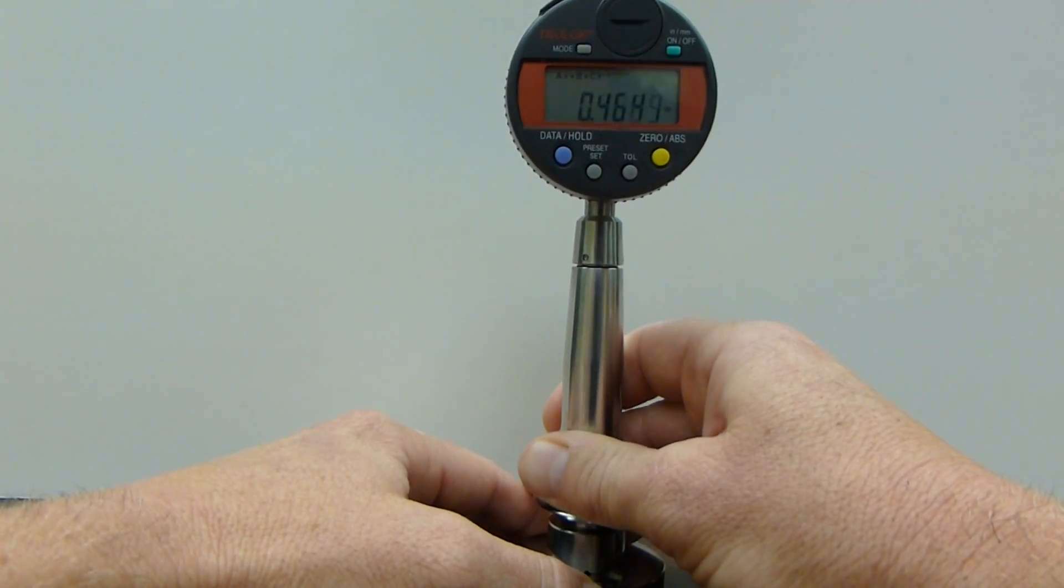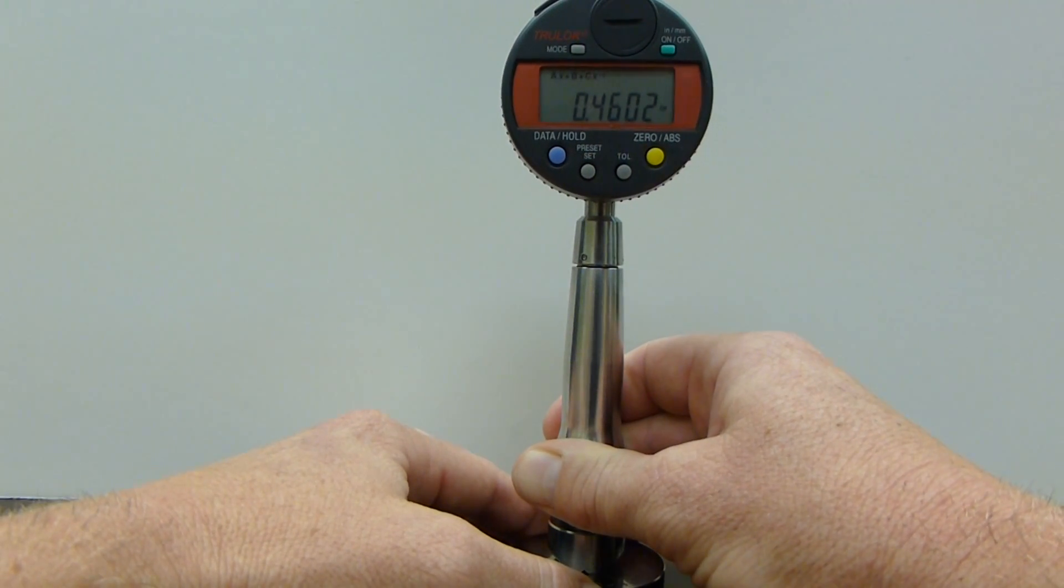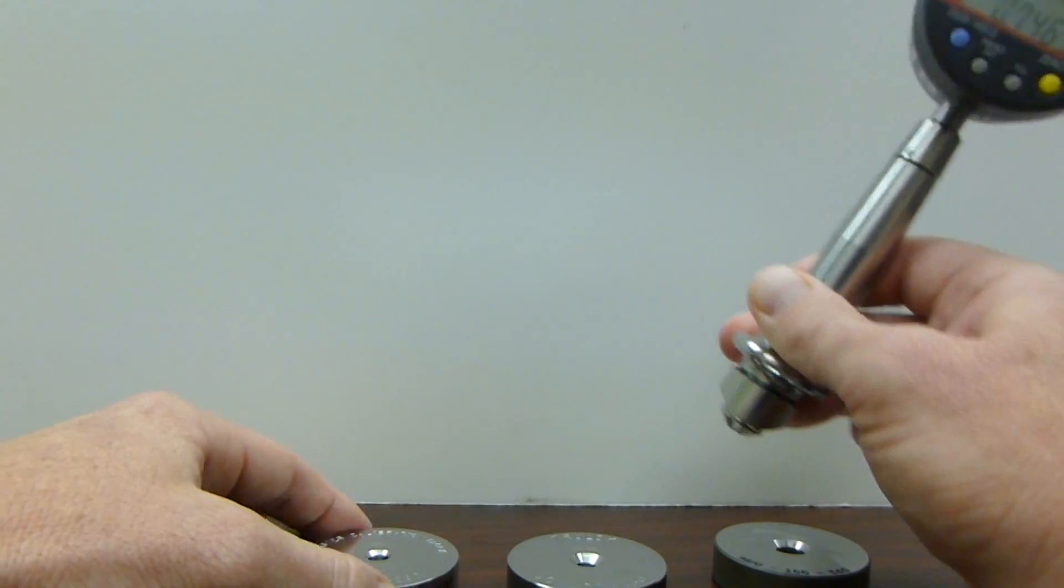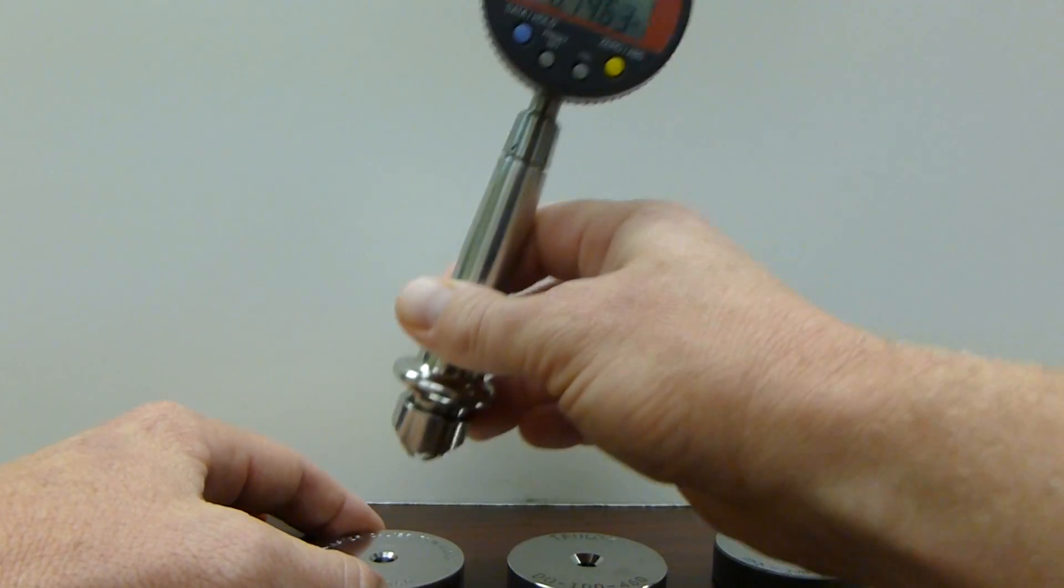Then I will repeat my measurement to make sure that my gauge is repeating what I just preset the gauge to. Now I am going to go check my lower limit and my upper limit.